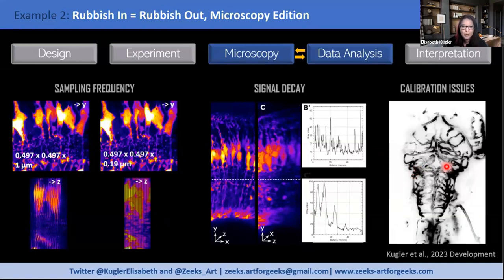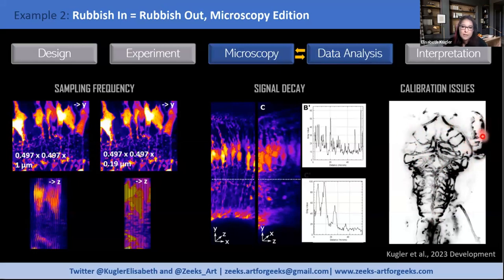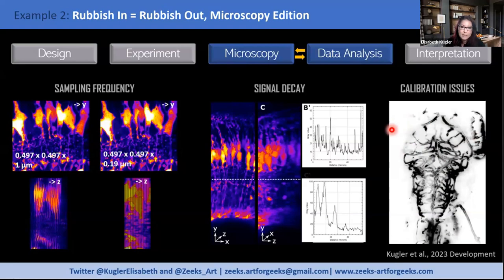The third example is calibration issues, shown here from light sheet microscopy. We look at brain vessels of a zebrafish as a maximum intensity projection. If this is the left brain hemisphere and the right, you'd expect equivalent data on both sides. But certain structures are invisible on one side because the light sheet wasn't accurately aligned. If asked to quantify the same feature on both sides, I would have to say I can't — because I can't see it. Getting data quality right before analysis is essential.